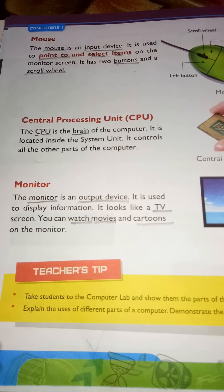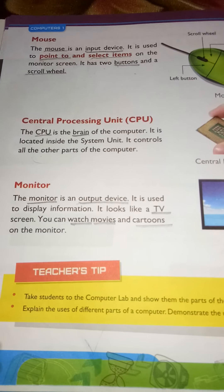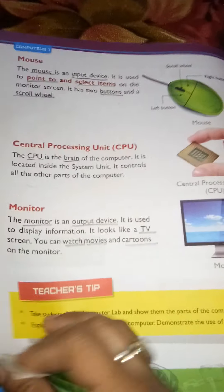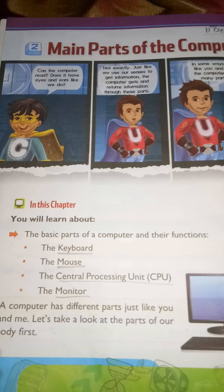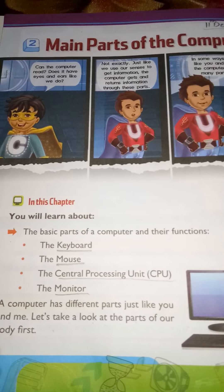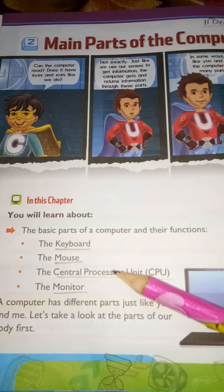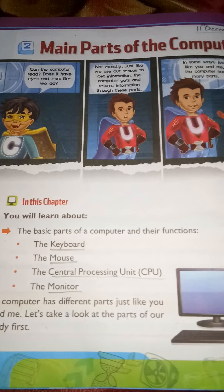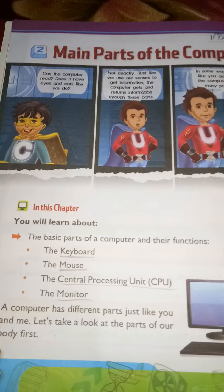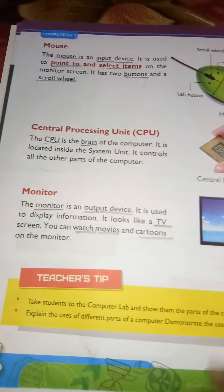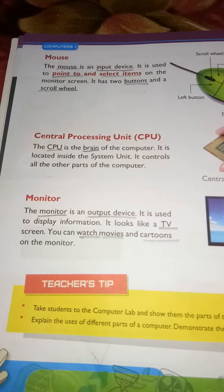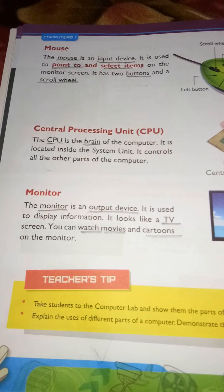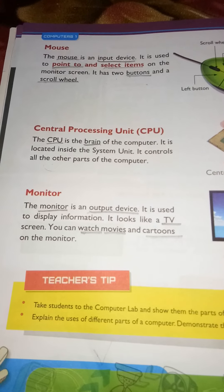I hope you understood this chapter. In this chapter we read about the main parts of the computer: keyboard, mouse, CPU, and monitor. These are the parts of the computer. You have to read this chapter very carefully. Now come to the book exercise.